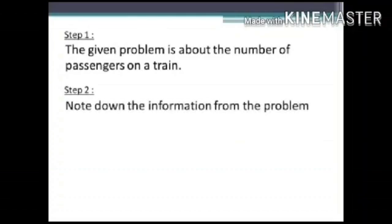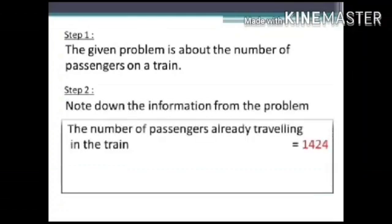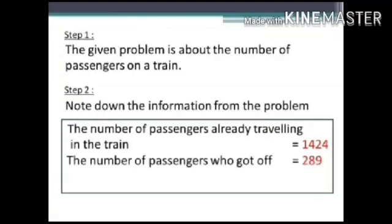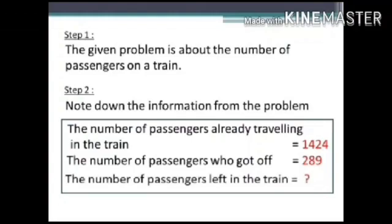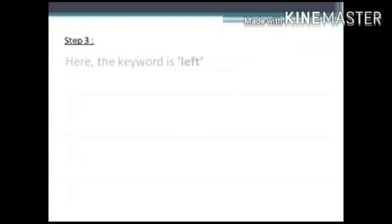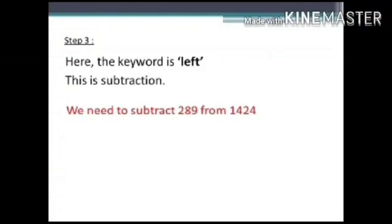The number of passengers already travelling in the train: 1424. The number of passengers who got off: 289. We need to find out the number of passengers left in the train. Step 3: The keyword is 'left' — this is subtraction. We need to subtract 289 from 1424.